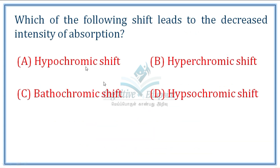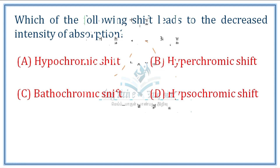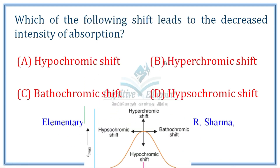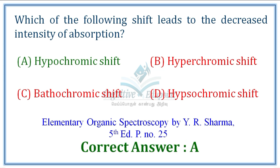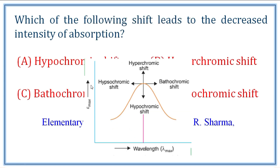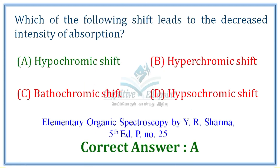Next question: Which of the following shifts leads to decreased intensity of absorption? In ultraviolet spectroscopy, there are four kinds of spectral shifts. If the intensity of absorption is decreasing, it is called a hypochromic shift. The correct answer is hypochromic shift, answer A.